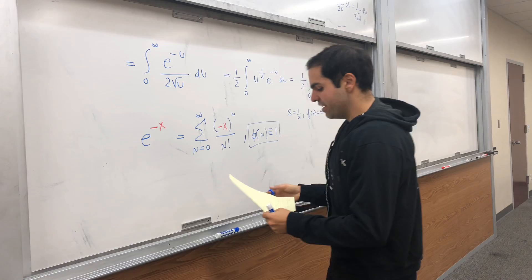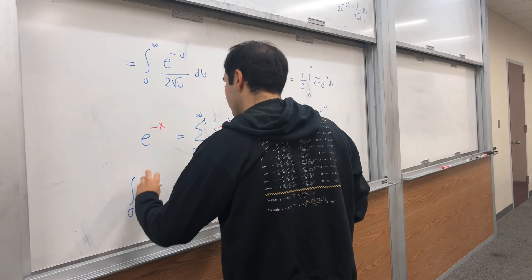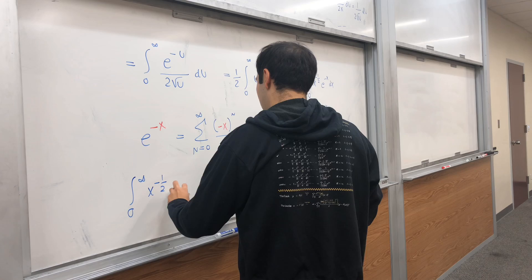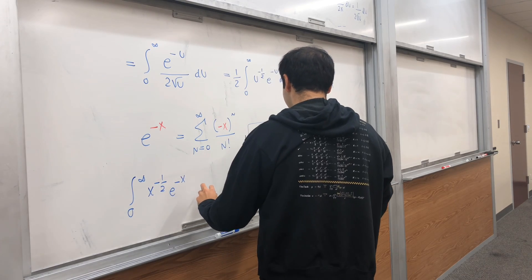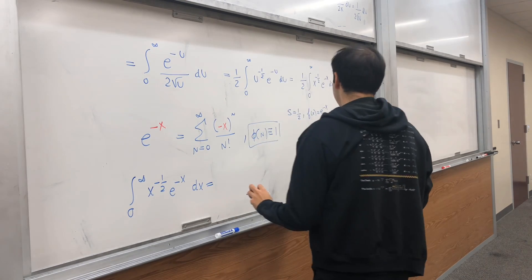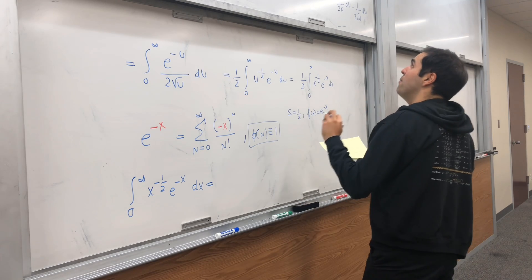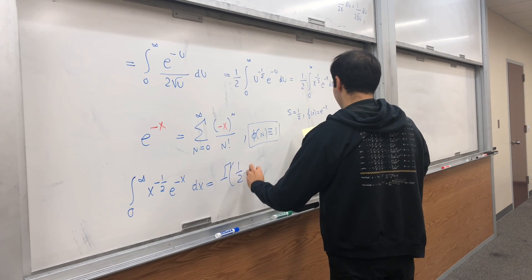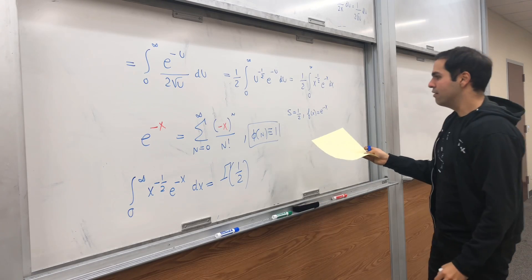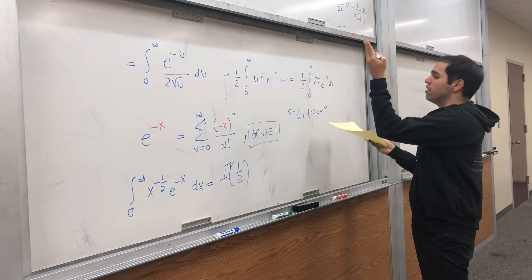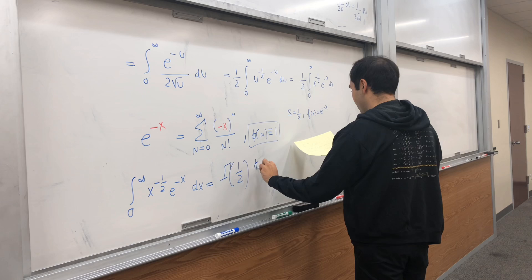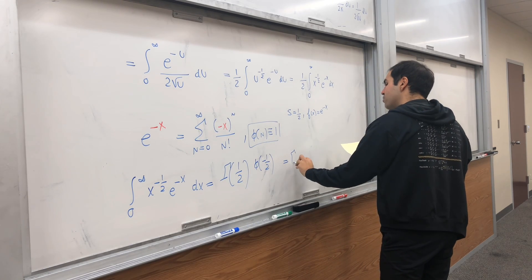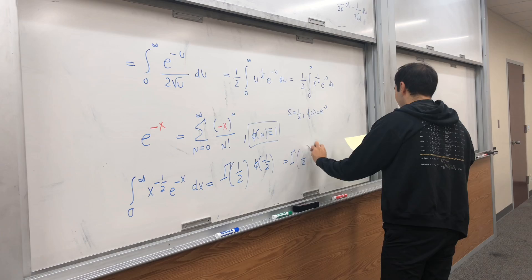And then what we get is the integral from 0 to infinity of x to the minus one half e to the minus x dx is equal to gamma of s, so gamma of one half, times phi of minus s. But phi of minus one half, phi is just identically equal to 1, so it's just gamma of one half.